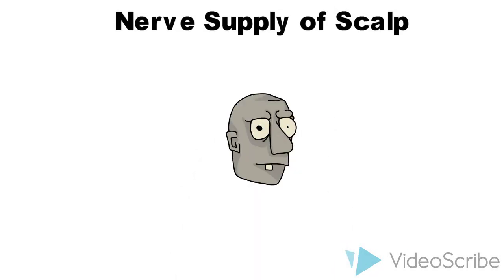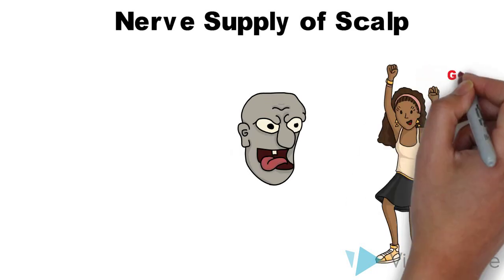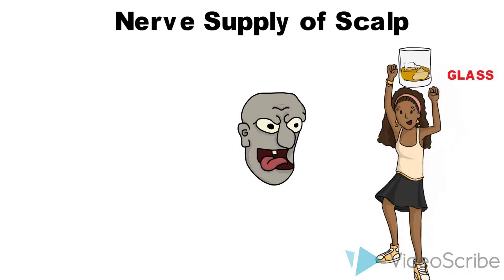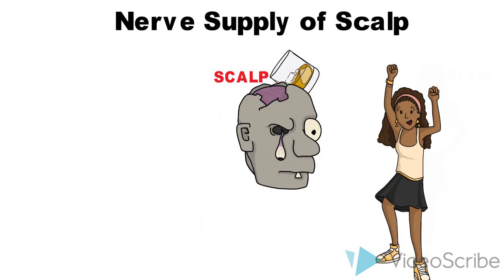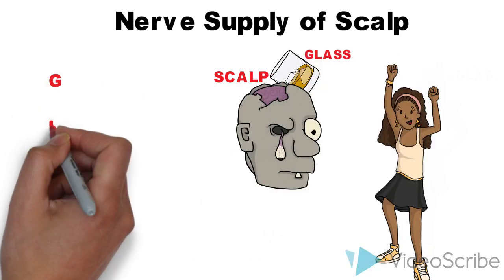To remember the names of these nerves, look at this animation where this ugly guy is teasing a girl and therefore the girl broke his scalp with a glass.